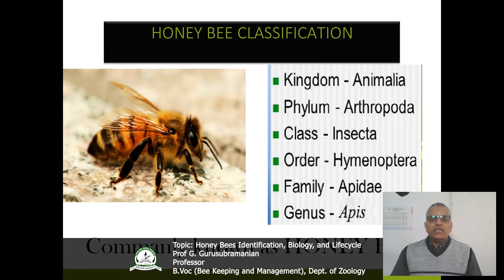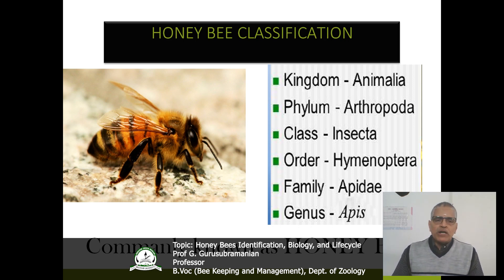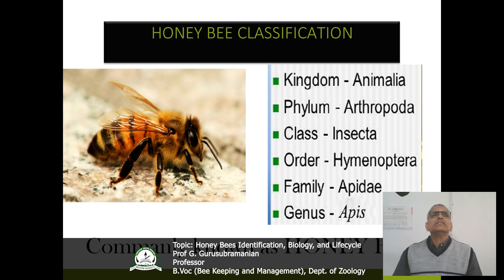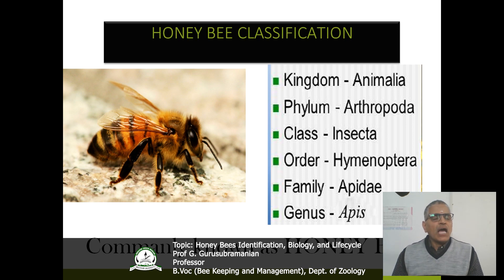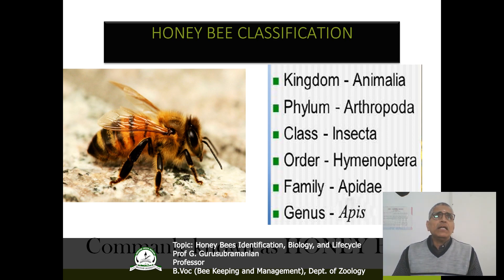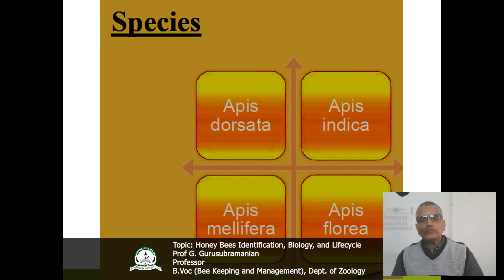Coming to the classification of the honeybees: this is coming under the phylum Arthropoda, which means segmented body. The class is Insecta — head, thorax and abdomen, a pair of antennae, and six legs. The order is Hymenoptera, family Apidae, and the genus is Apis. That is why it is known as Apiculture — in Latin, Apis means honeybee.